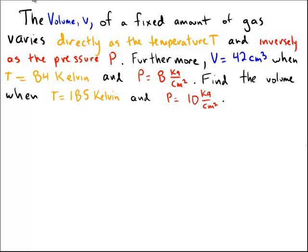Okay, let's do a problem about combined variation. So let's suppose that the volume V of a fixed amount of gas varies directly as the temperature and inversely as the pressure P.